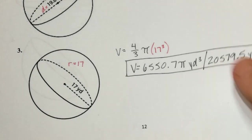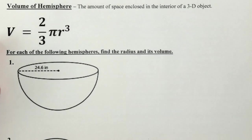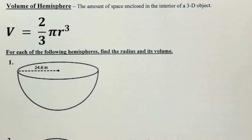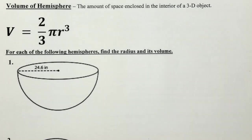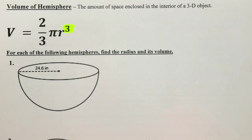Now let's look at hemispheres. The only thing that changes is the fraction — a hemisphere is half of a sphere, so we take half of four-thirds, which gives us two-thirds. We still cube the radius; the only change is a 2 in the numerator.